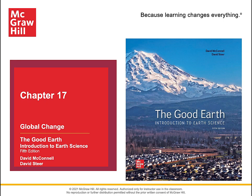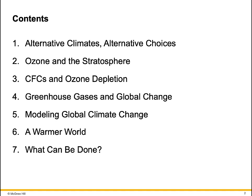Chapter 17: Global Change. Alternative climates and alternative choices. Topics covered include ozone and the stratosphere, CFCs and ozone depletion, greenhouse gases and global change, modeling global climate change, and a warmer world and what can be done.